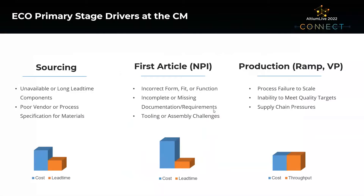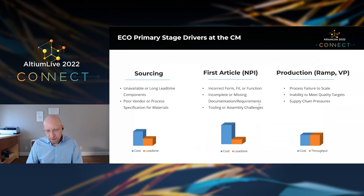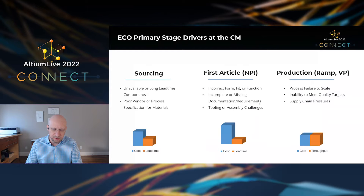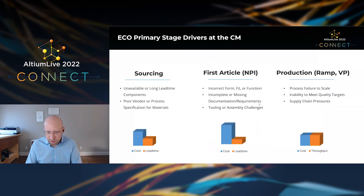We're seeing a lot of that here in 2021 with supply chain issues where components we're designing around can suddenly go out of stock and come in with multi-year lead times, requiring us to find alternative components. The second stage is the first article in new product introduction, where the manufacturer tries to put your process and design to test and verify everything can be built as specified. The big challenges here are around incorrect form, fit, or function of components, incomplete documentation, or significant challenges with tooling or the assembly process.